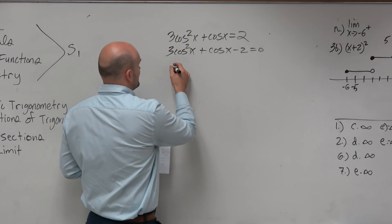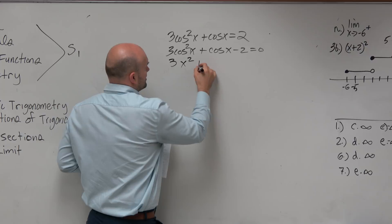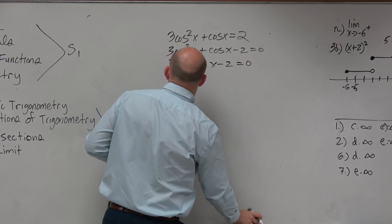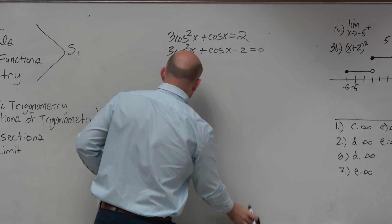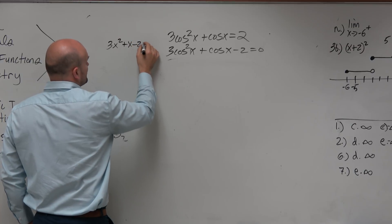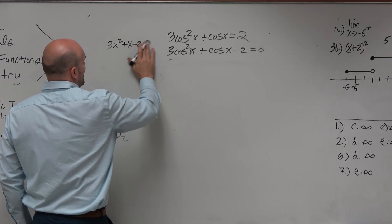So I can also think of this as 3x squared plus x minus 2 is equal to 0. Actually, let's do a little sidebar because I don't want you to get confused. So let's do this as 3x squared plus x minus 2. How would I factor that?